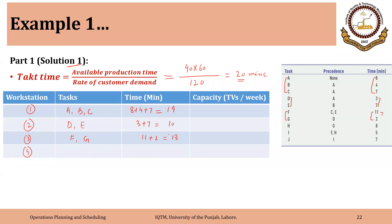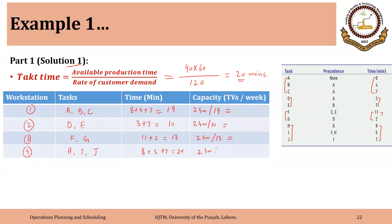We can form the fourth workstation consisting of tasks H, I, and J. The time will be 8 plus 5 plus 7, which is 20 minutes. None of these workstations exceeds the allowed time of 20 minutes. We can also calculate the capacity: available time divided by time per assembly. That is 2400 divided by 19, 2400 divided by 10, 2400 divided by 13, and 2400 divided by 20.